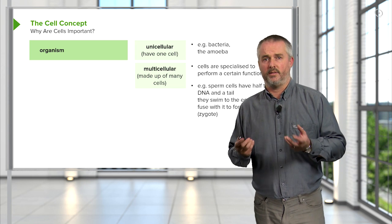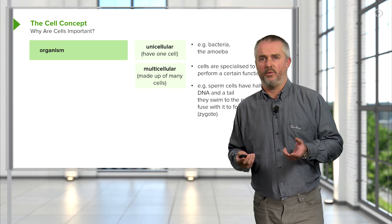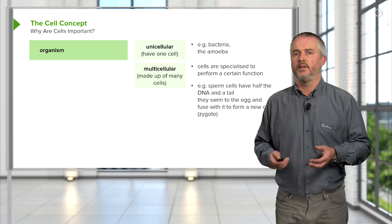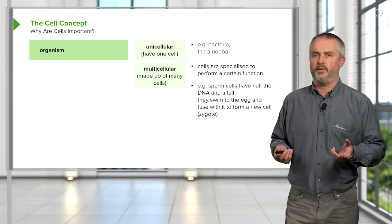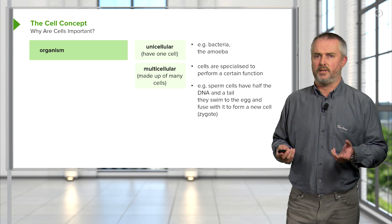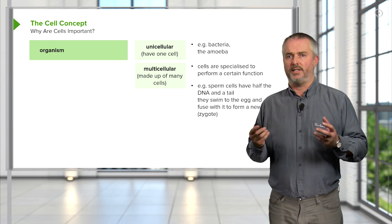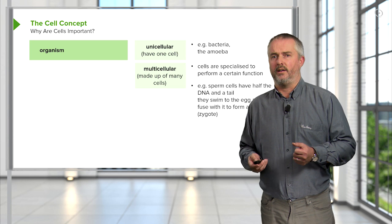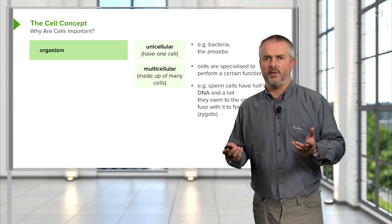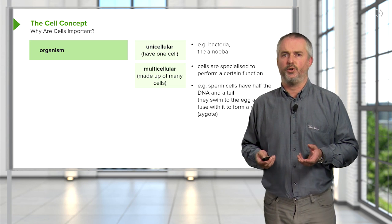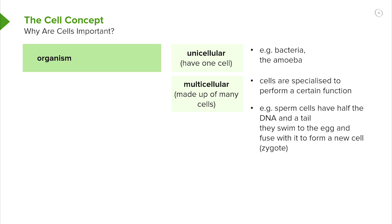There are some unicellular organisms that only have one cell. The amoeba is one example — it's categorized as an animal cell. Bacteria are all unicellular; there's no multicellular bacteria at all. But there are many multicellular organisms like our cells where the cells are specialized for a particular function.